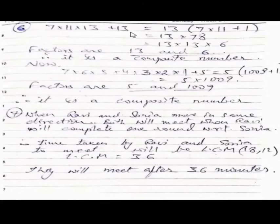See, 7 into 11 into 13 plus 13 is what the number actually is. You can take 13 common in both here. 13 taking common, 7 into 11 come inside the bracket and for 13 it is 1. When we expand, we get the same number.